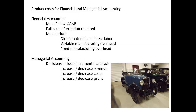The costs of a product are looked at differently with financial and managerial accounting. Product costs for financial accounting must follow GAAP, and full cost information is required. This means that the product cost includes direct materials, direct labour, variable and fixed manufacturing overhead. Managerial accounting looks at more than this — it is also interested in incremental analysis of costs, including changes in costs, revenues, and profits on an incremental basis.